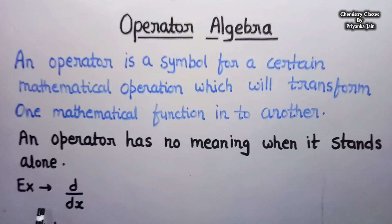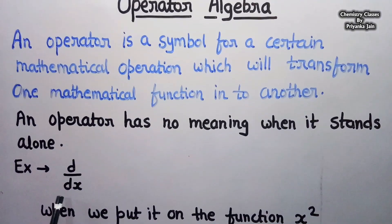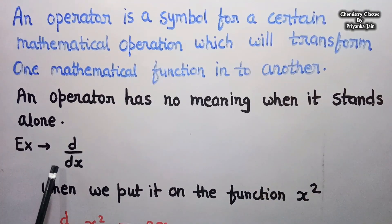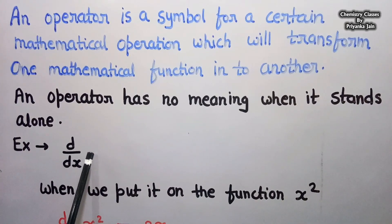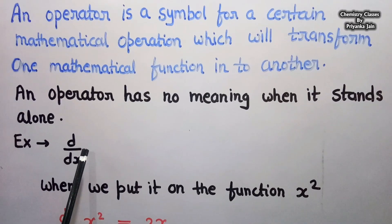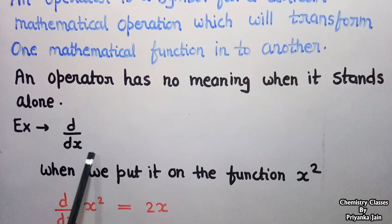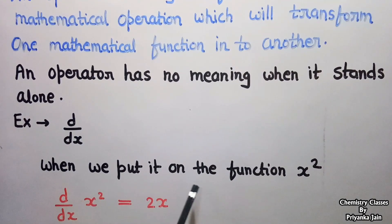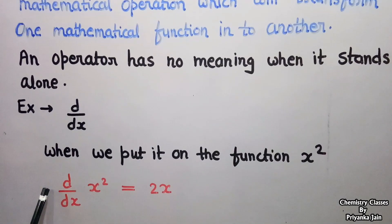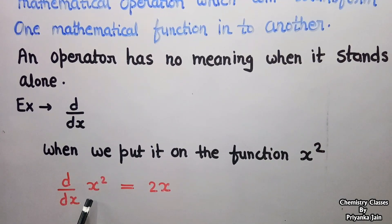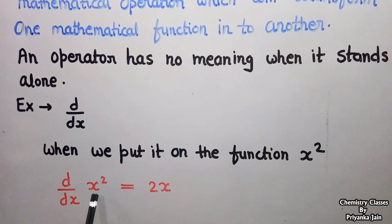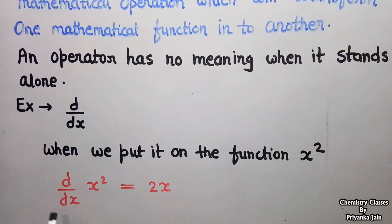An example of an operator is d/dx. Differentiation d/dx is an operator and it has no value when it stands alone. But when we put a function in front of it, it will have a meaning — it means the differentiation of that function. For example, if we put the function x², then d/dx of x² means the differentiation of x², which gives us 2x. So we get a new function; the original function is converted into another function. This is the meaning of the operator, and so d/dx is an operator.